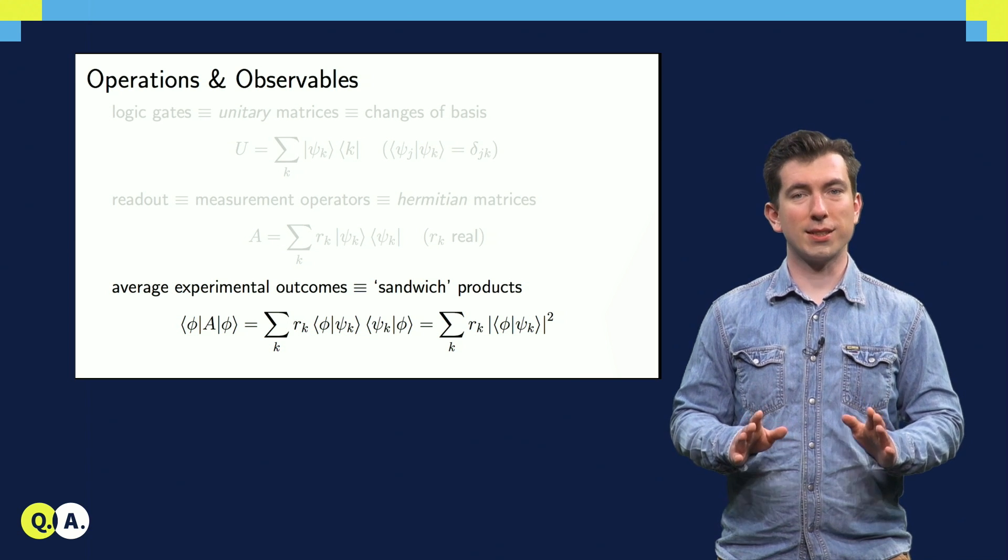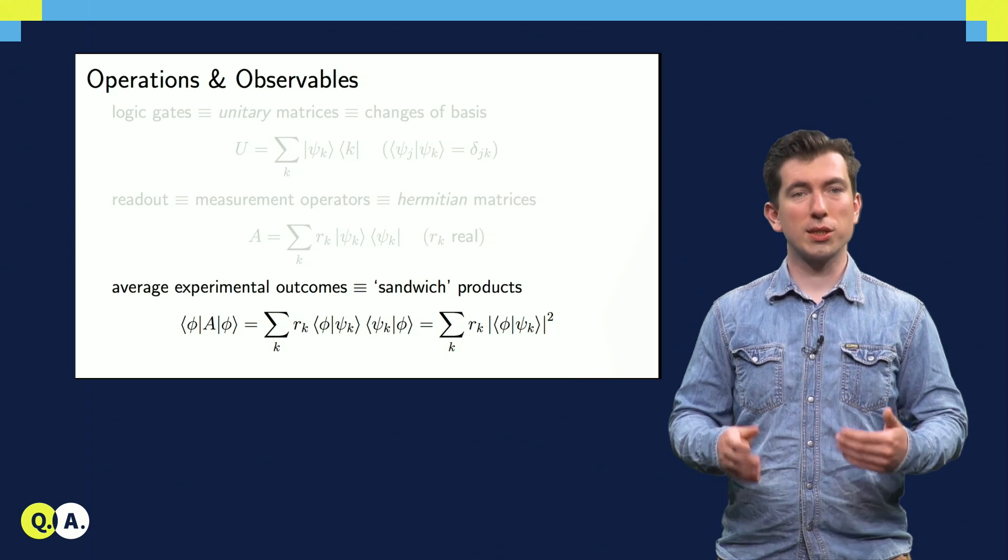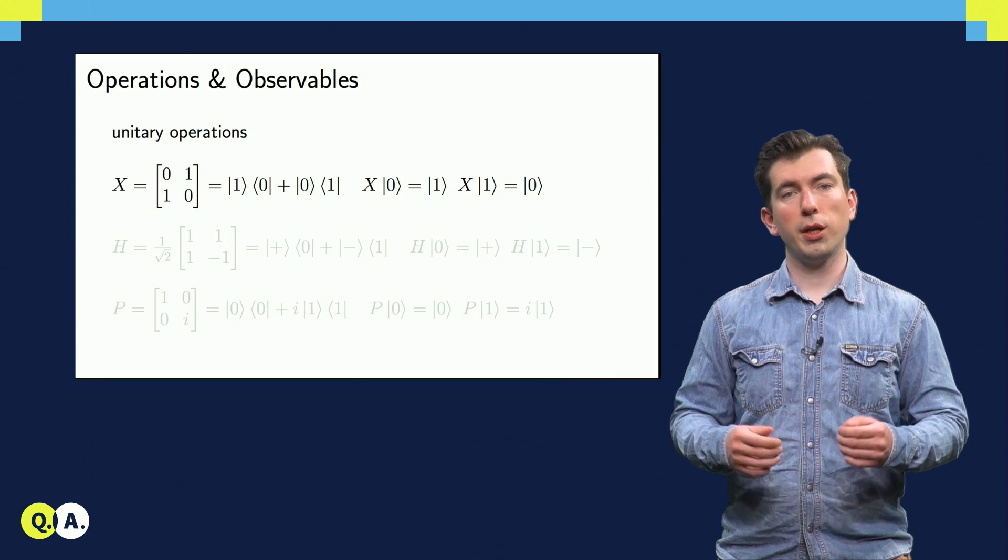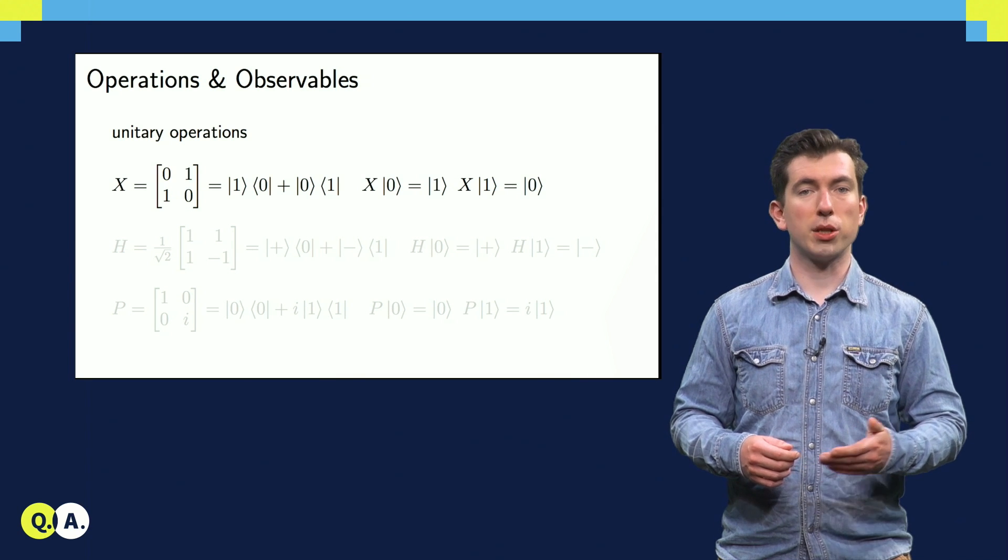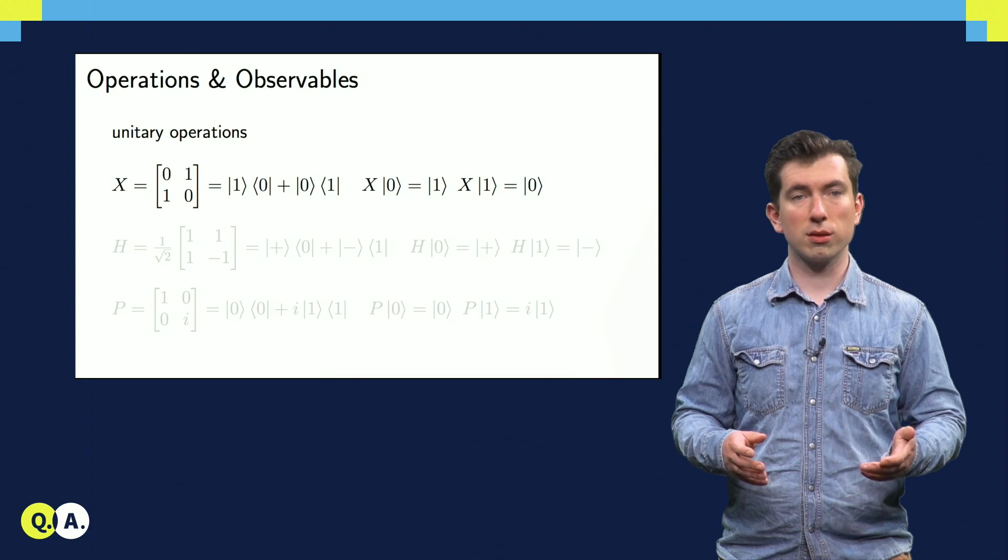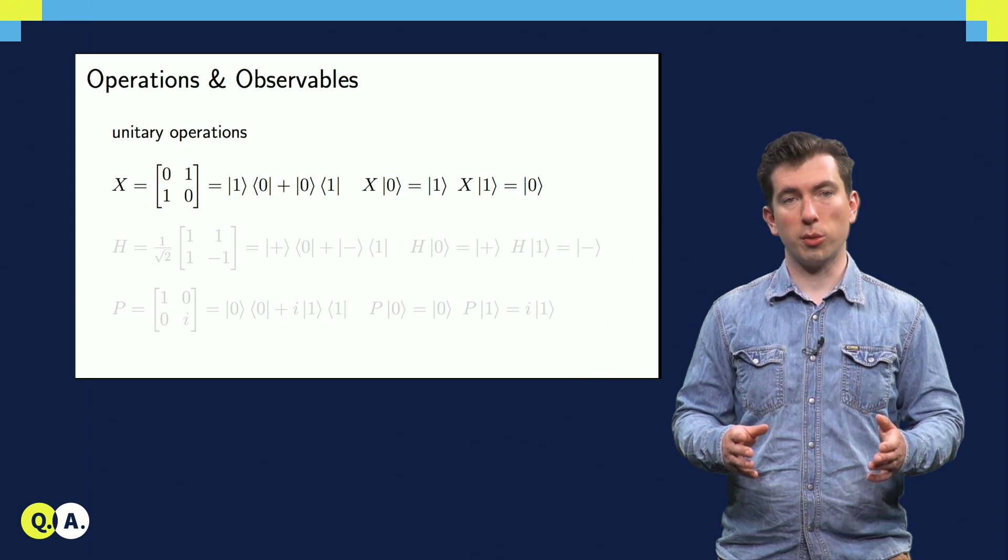Now this is probably a lot to take in, all at once, so let's take a look at a few examples. Here, we have a unitary operation that exchanges states in the computational basis, which we call X, or the Pauli X, if you're already familiar with Pauli matrices.